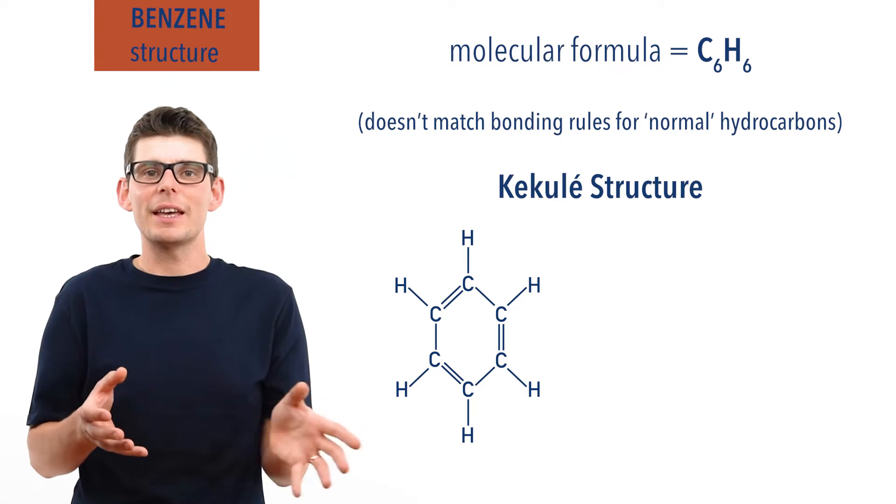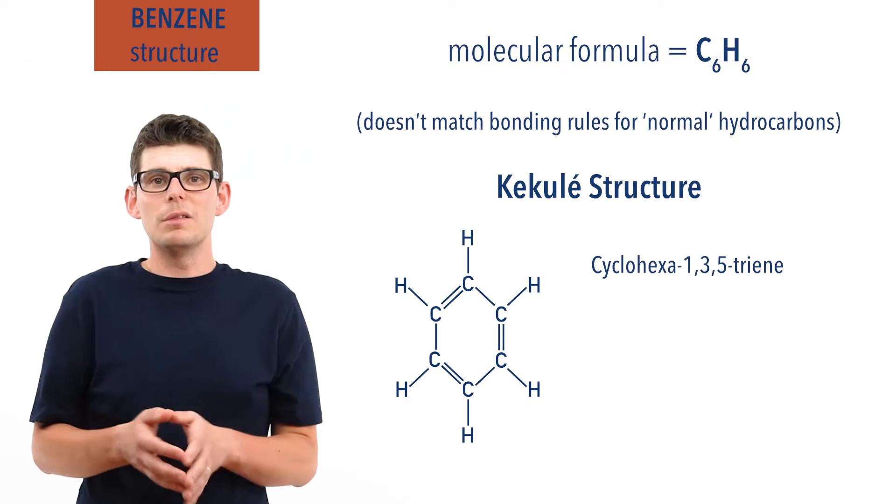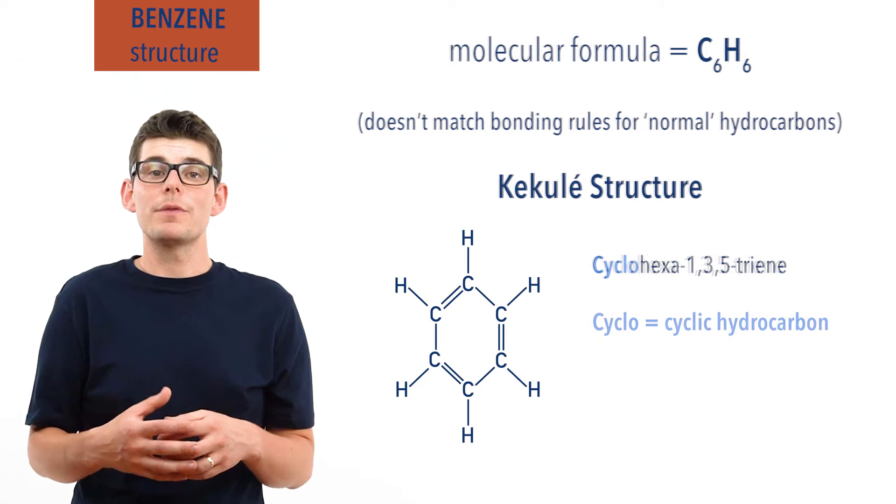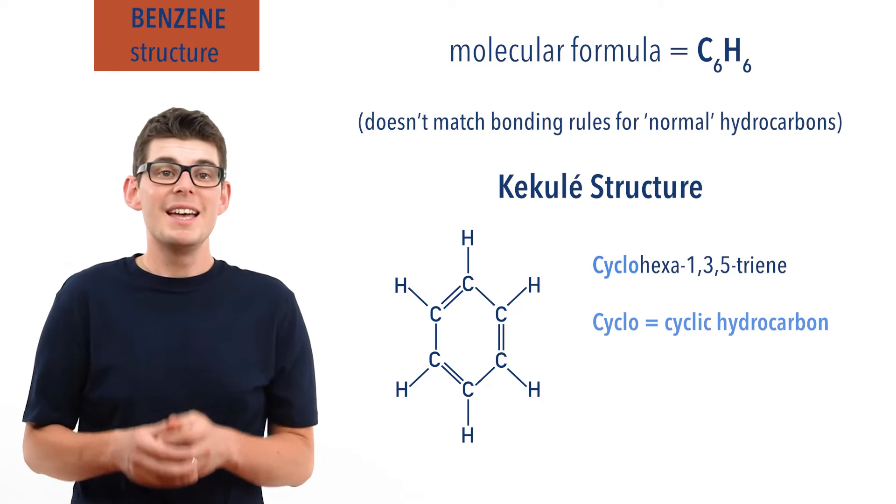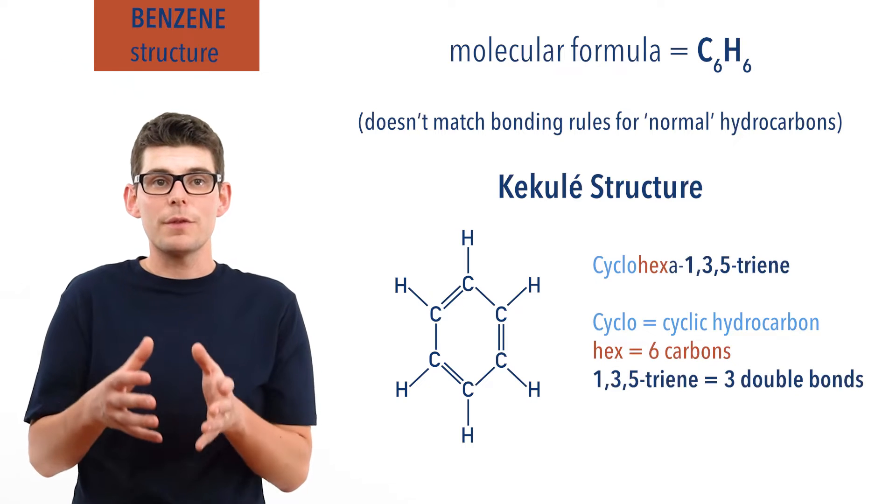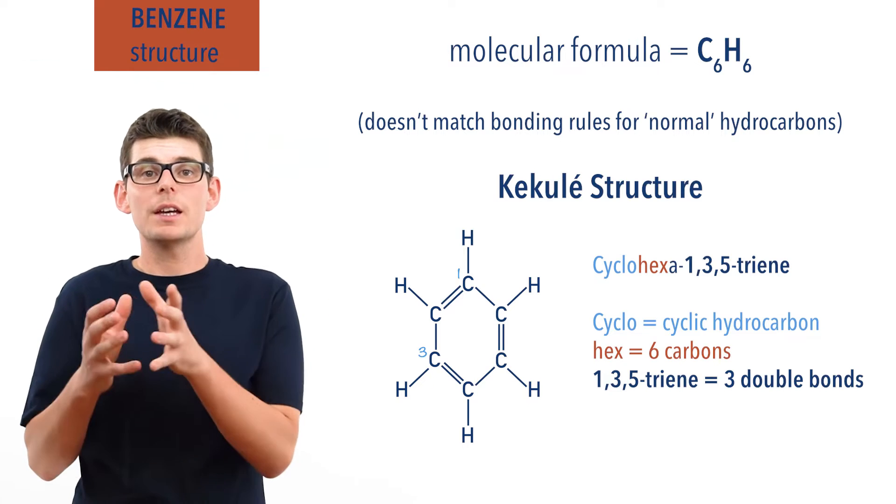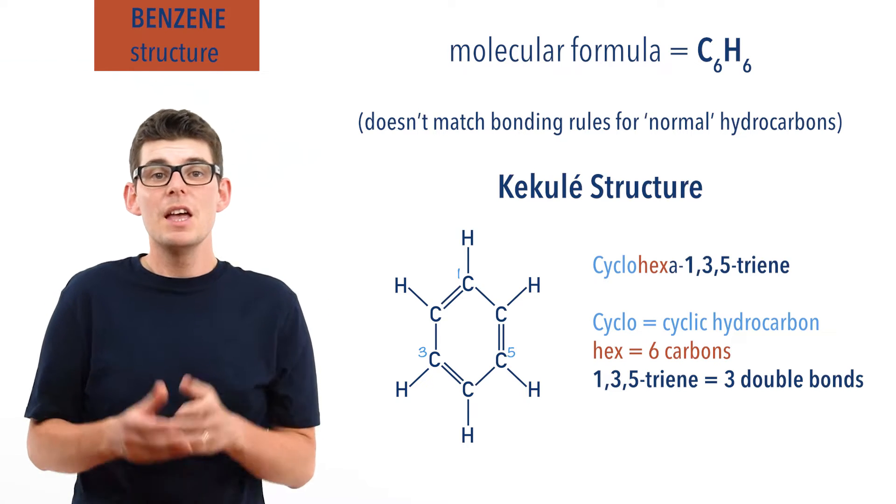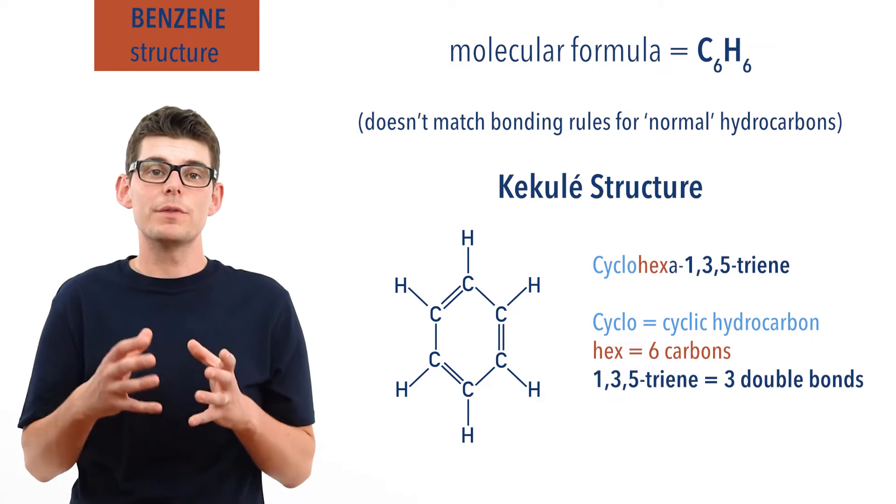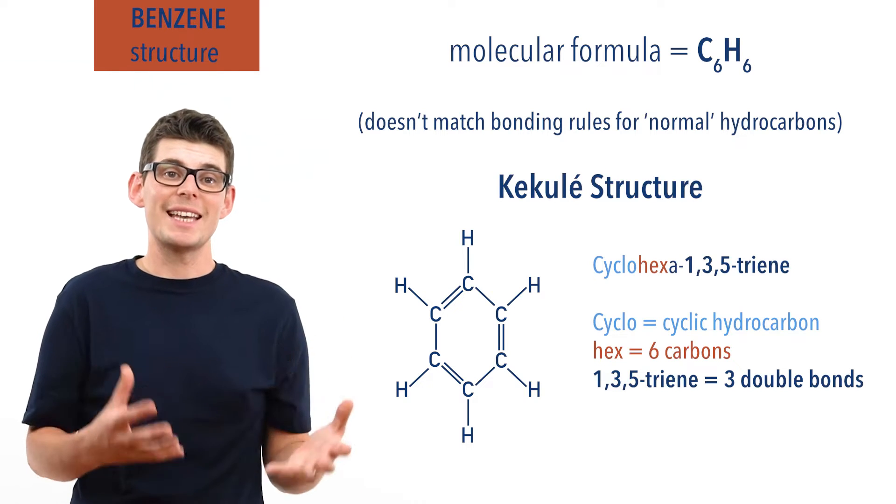The IUPAC name for the Kekulé structure of benzene is cyclohexa-1,3,5-triene. Now the purpose of this video isn't to go through the naming of compounds, but the cyclo comes from the fact it's a cyclic hydrocarbon, the hex for the fact there are six carbon atoms, and the 1-3-5-triene from the fact that there are three double bonds in the structure, starting at carbon 1, carbon 3 and carbon 5. This is why you sometimes see the Kekulé structure referred to as cyclohexa-1,3,5-triene. For this video though, to keep things easier, we will refer to it as the Kekulé structure.